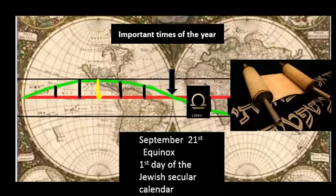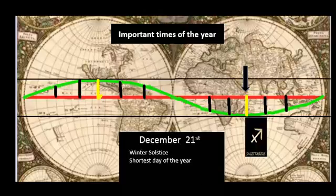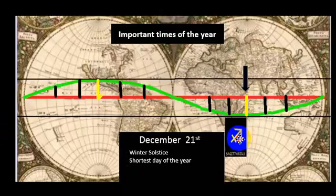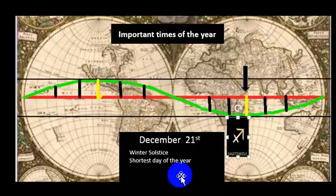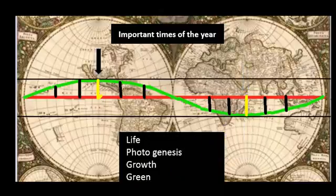Moving right along to December 21st, this is the shortest day of the year. Sagittarius comes into play. At the lowest point of the sun, Sagittarius the archer is supposed to have pierced or shot an arrow at the sun, bringing it to its lowest point. Back to important times of year.